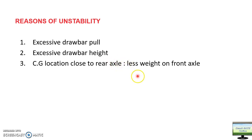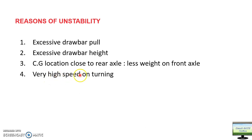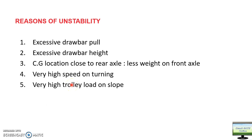Number four is turning at very high speed — lateral overturn or lateral instability may occur. Number five is very high trolley load — 20% of trolley load is supported by the tractor, creating a load moment that transfers weight from front to rear, causing longitudinal overturn.